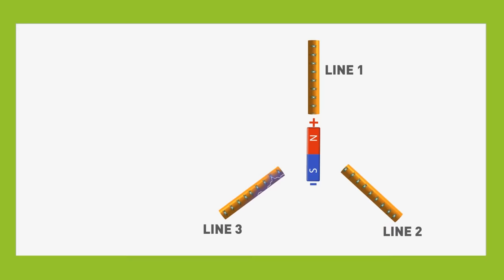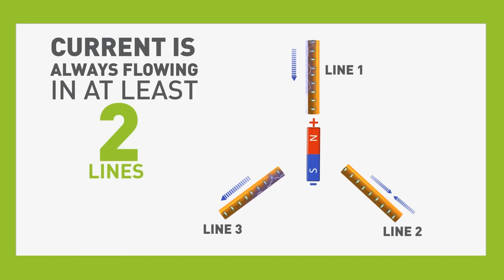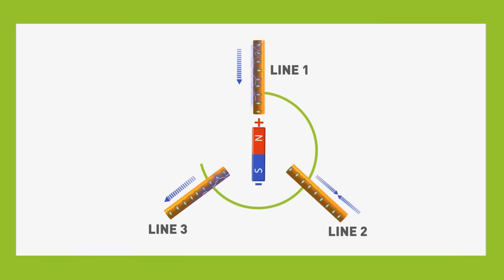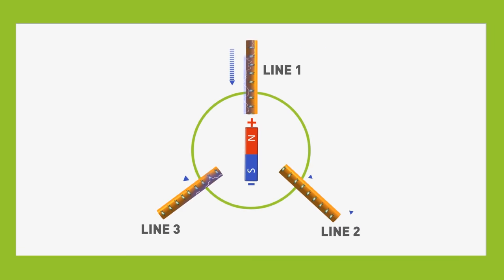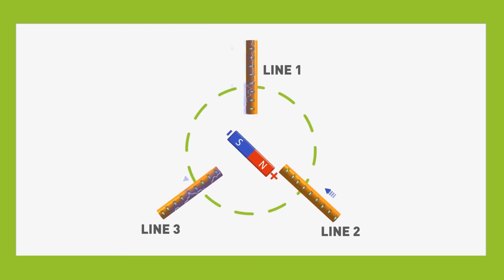Hopefully, this example shows you how, at any time, current is always flowing in at least two lines. It also shows the relationship between the three lines as the magnet spins in a circle. As the magnet goes around the clock face, each of the three lines will be affected by either the north or south poles, except when the magnet is perpendicular to a line.